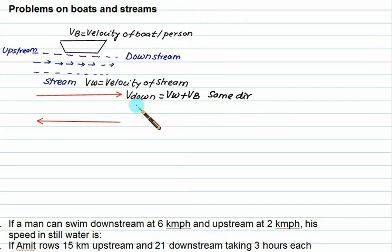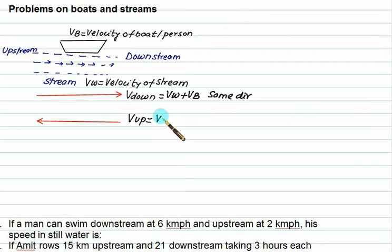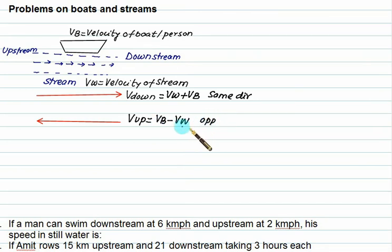This is velocity of down and this is velocity of up. Naturally, you have to keep the velocity of boat more than the velocity of water — then only subtraction is possible. When moving upstream, they are moving in opposite directions. But this is not a relative concept — it is a slightly different idea.